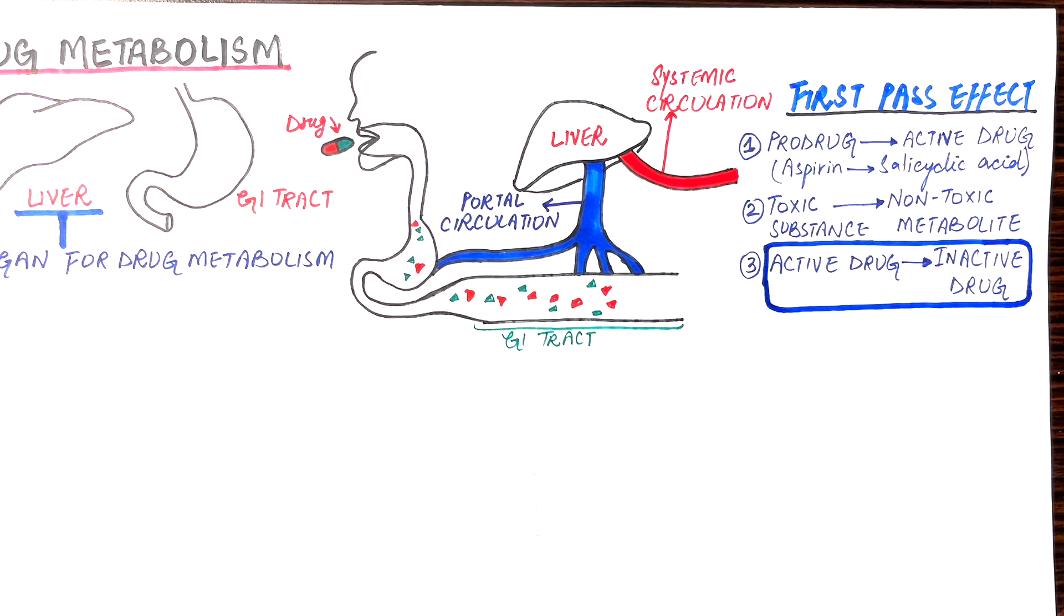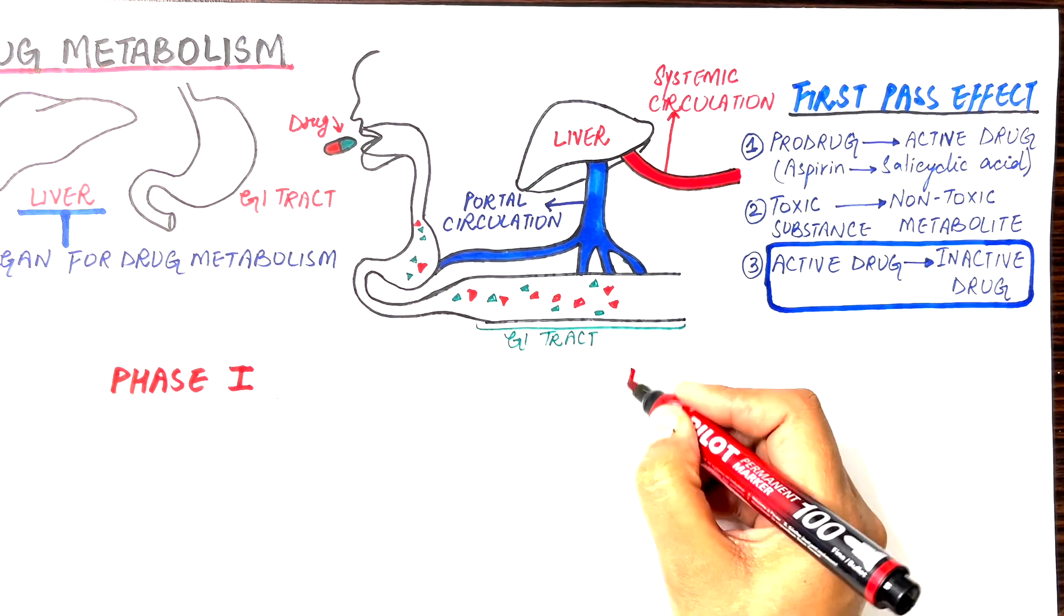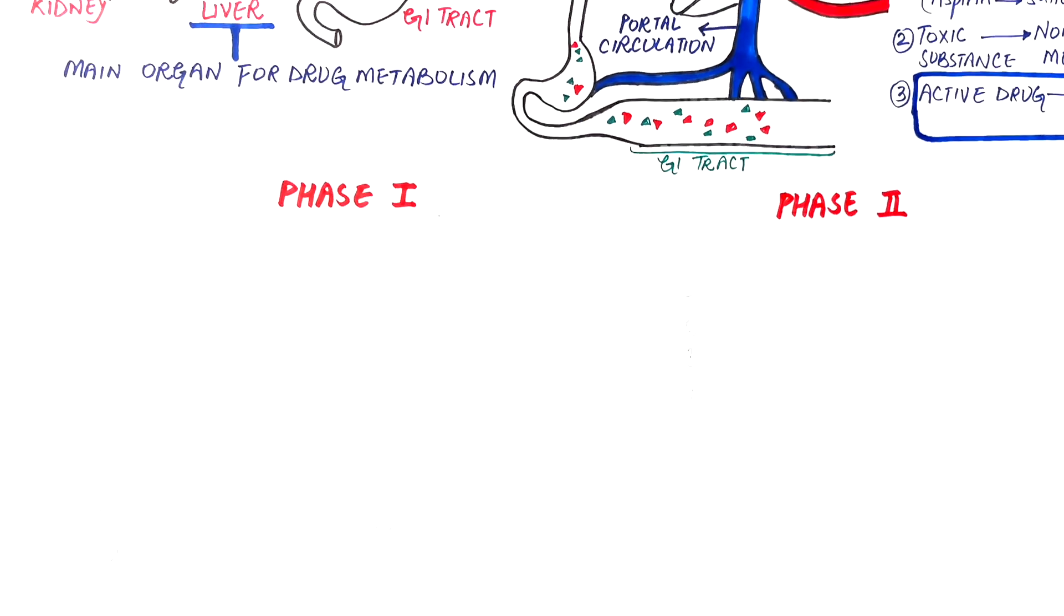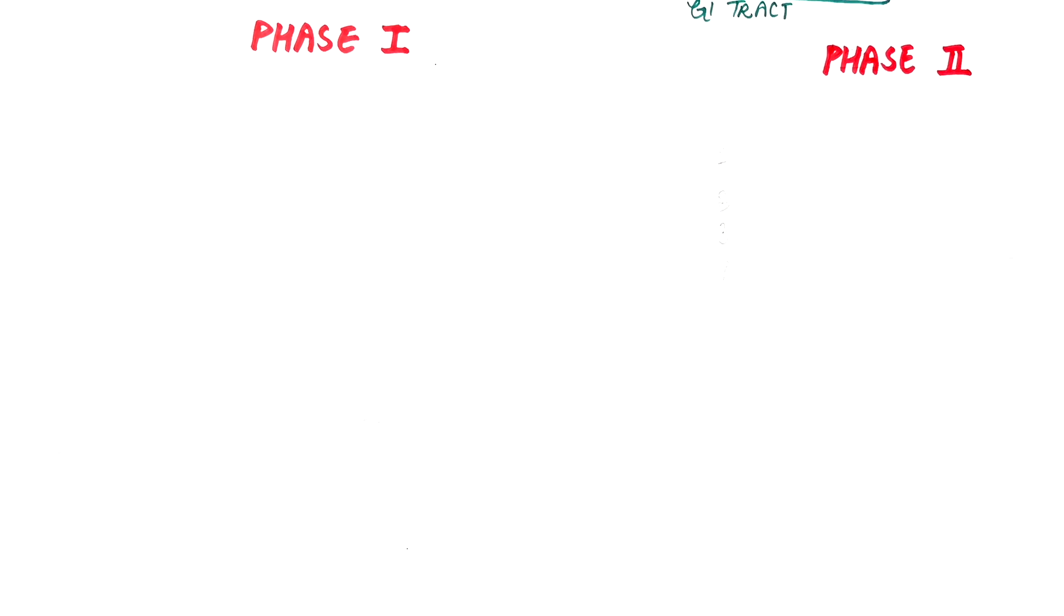Metabolism of drugs from active to inactive states occurs by mechanisms categorized as phase 1 and phase 2 metabolism. In phase 1 metabolism, the drug is modified to a polar or charged form.